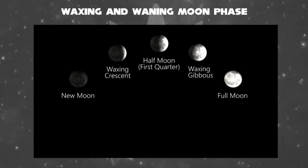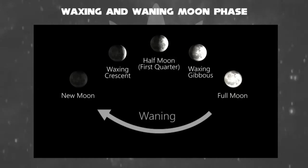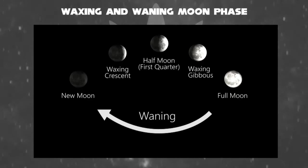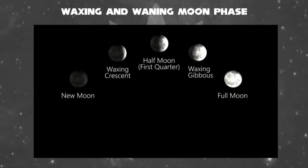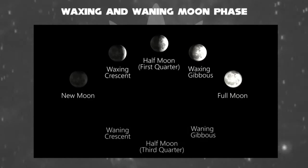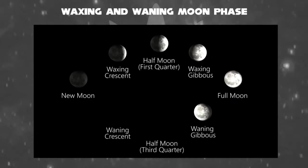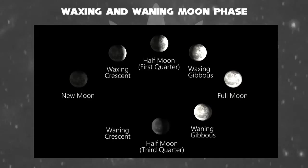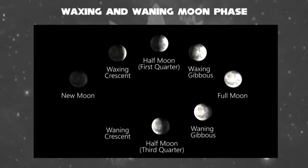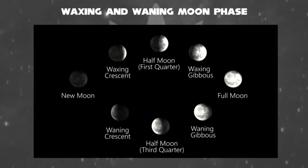Conversely, from full moon to new moon, a moon that is waning is one which starts to shrink. Similarly, we can divide waning into three subdivisions: a waning gibbous, second is the half moon again called the third quarter, and third is a waning crescent.